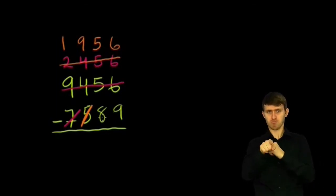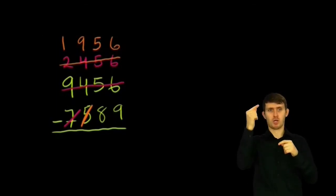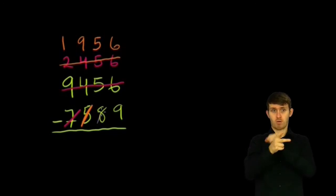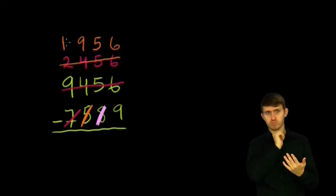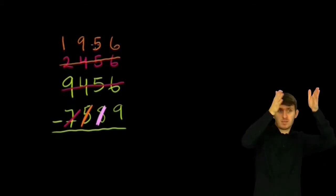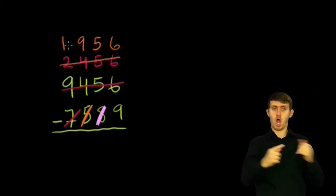Now I can subtract 80 from both that number and that number. So if I subtract 80 from this bottom number, the 8 disappears, right? 89 minus 80 is just 9. And I subtract 80 from this top number, I can just think of, what's 195 minus 8?